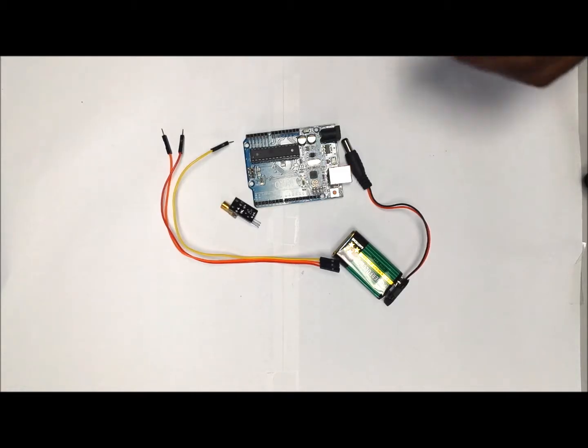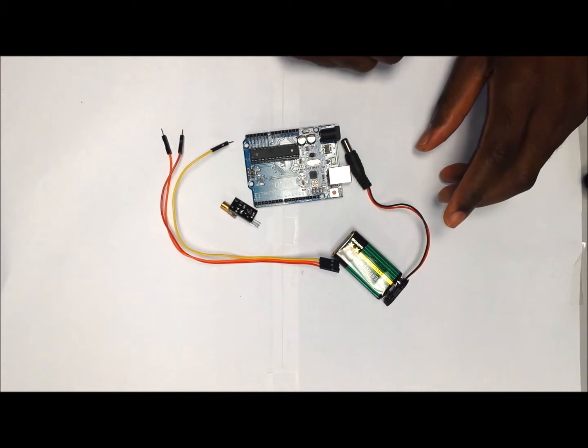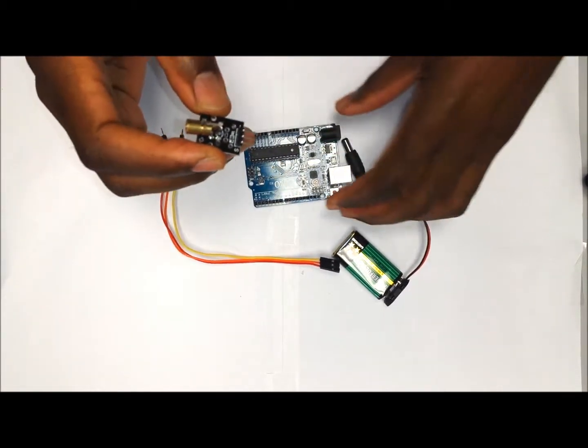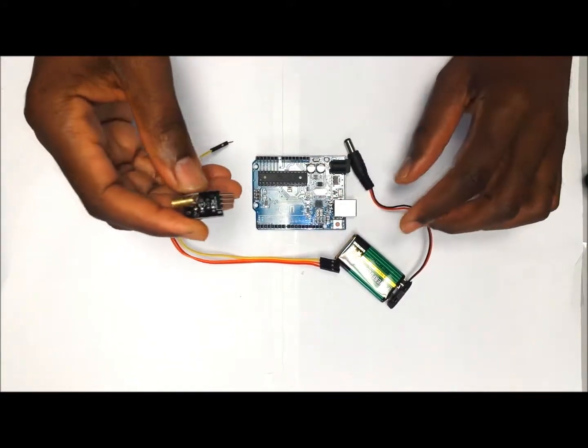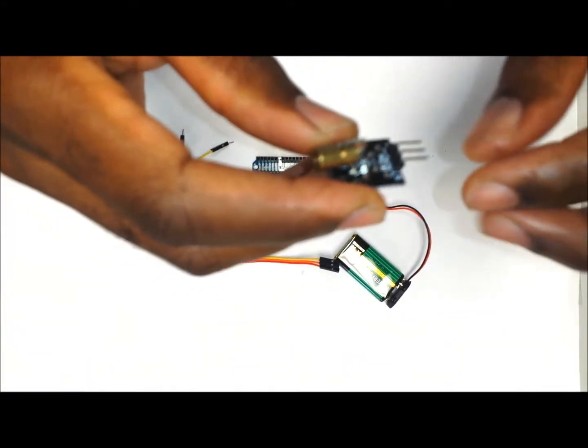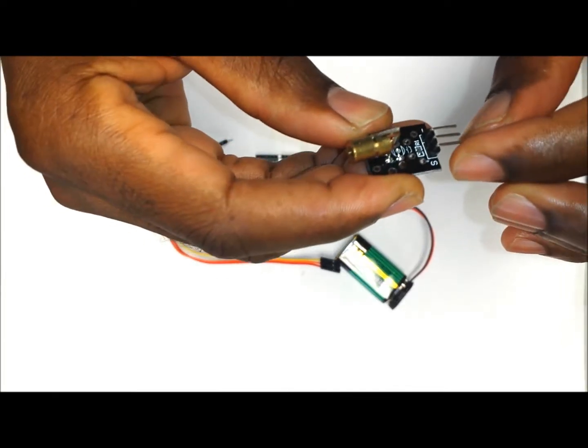Hello guys, this is going to be a quick video to show you how the laser module works and how to hook it up onto the Arduino. The laser module itself comes with three pins: the signal pin, the power pin, and the GND or ground pin.